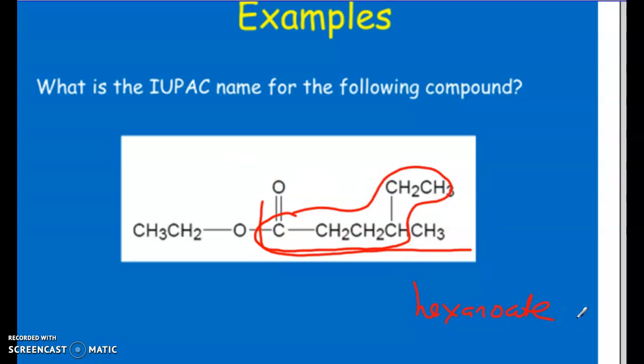So this is hexanoate, right? On carbon one, two, three, four, we have a methyl group. So it's four-methylhexanoate. The other portion, we have an ethyl group. So it's ethyl space four-methylhexanoate.